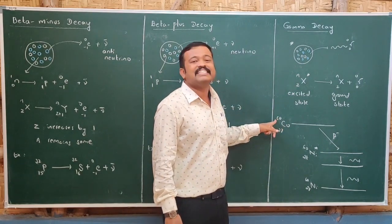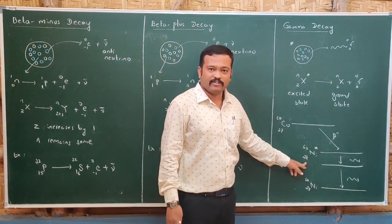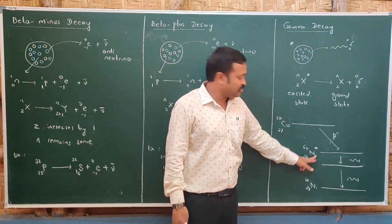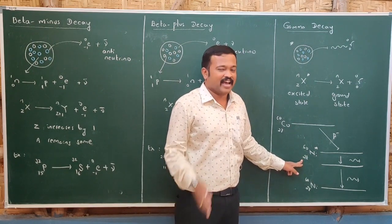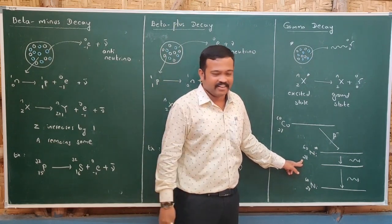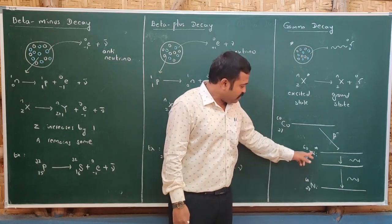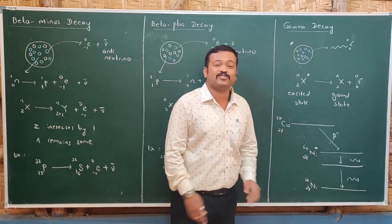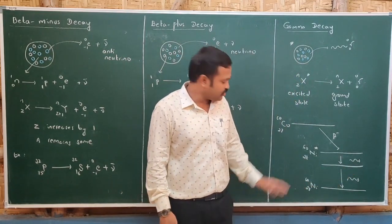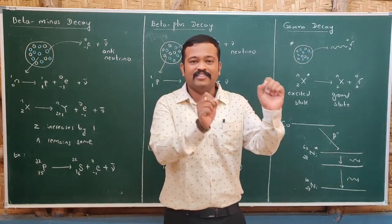Let us take an example: cobalt-60 (atomic number 27). It is a beta emitter. When it emits a beta particle, the atomic number increases by 1 to 28 and the mass number remains 60 — that is nickel. But this nickel is in an excited state. Just as atoms have different energy levels, nuclei also have different energy levels. This nickel in the excited state must come to the ground state. When nickel transitions from the excited state to the ground state, it emits gamma radiation, and this kind of decay is called gamma decay.